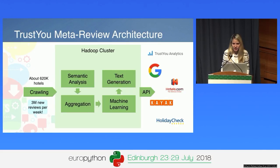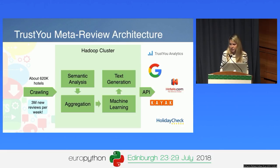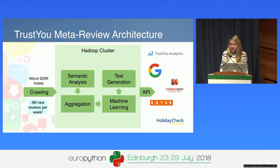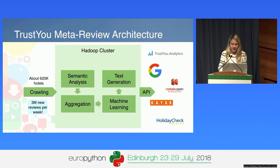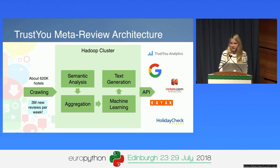So how do we actually get to the meta review? How do we build it? Every week we acquire reviews from many different sources on the internet. We have in our database about 620,000 hotels, and we crawl on average three million new reviews per week. That's quite a lot of data. We store this data in a Hadoop cluster. The first step in analyzing this data is the semantic analysis: for each sentence in each review, we map each part of the sentence to categories.